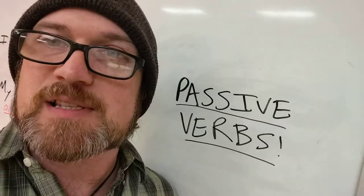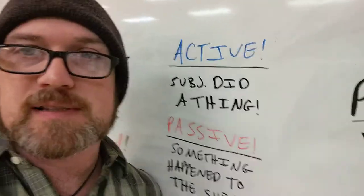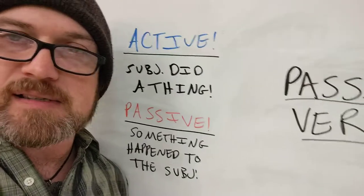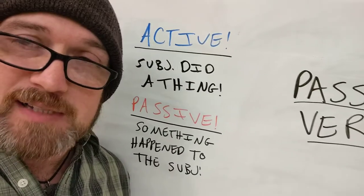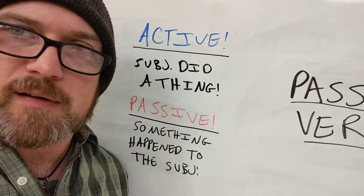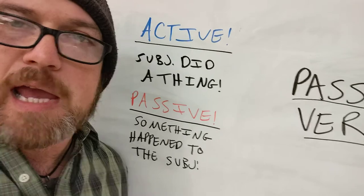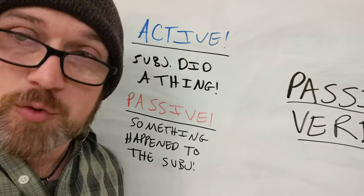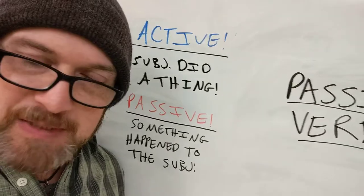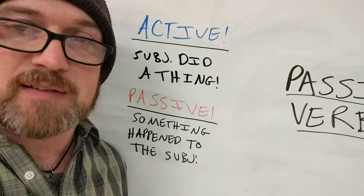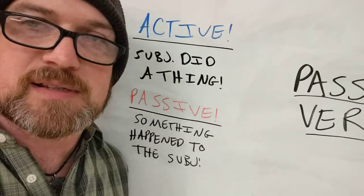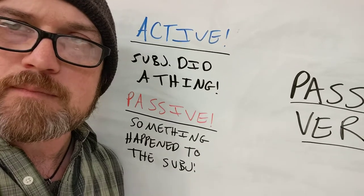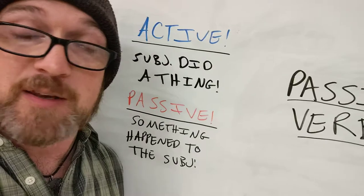This video is here to explain what it means for a verb to be passive. What it means is that you still have a subject, but that subject is not doing the verb. It may seem weird because a lot of us have it ingrained from elementary school that the subject does the verb — the verb is an action and the subject does it. Well, that's true as long as the verb is active. But sometimes the verb is passive, and a lot of your English teachers have probably tried to scare you away from ever using the passive.